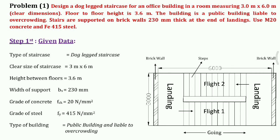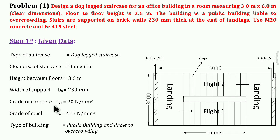Step 1: Given data. Type of staircase: dog-legged staircase. Clear size of staircase: 3 meter by 6 meter. Height between floors: 3.6 meter. Wall support thickness (B.S.): 230 mm. Grade of concrete, f_ck: 20 N/mm². Grade of steel, f_y: 415 N/mm². Type of building: public building, liable to overcrowding.